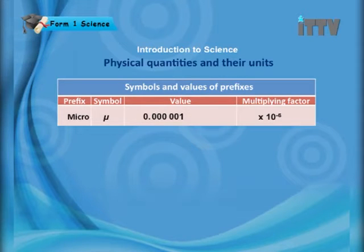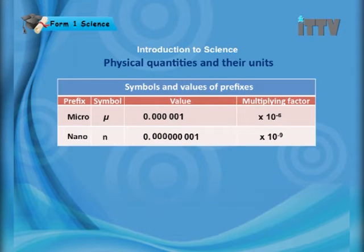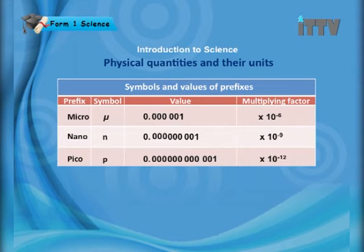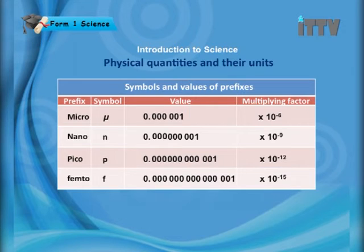Micro has a multiplying factor of 10 to the power of negative 6. Nano (symbol n) has a multiplying factor of 10 to the power of 9. Pico (symbol p) has a multiplying factor of 10 to the power of 12. And lastly, femto (symbol f) has a multiplying factor of 10 to the power of negative 50.